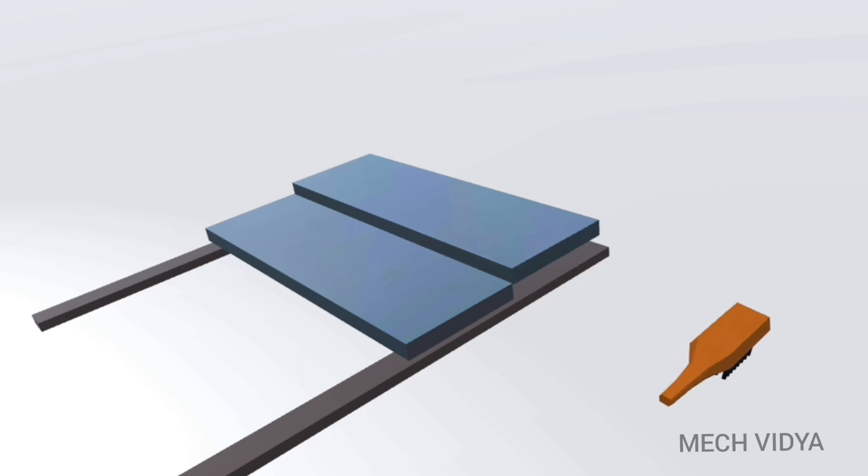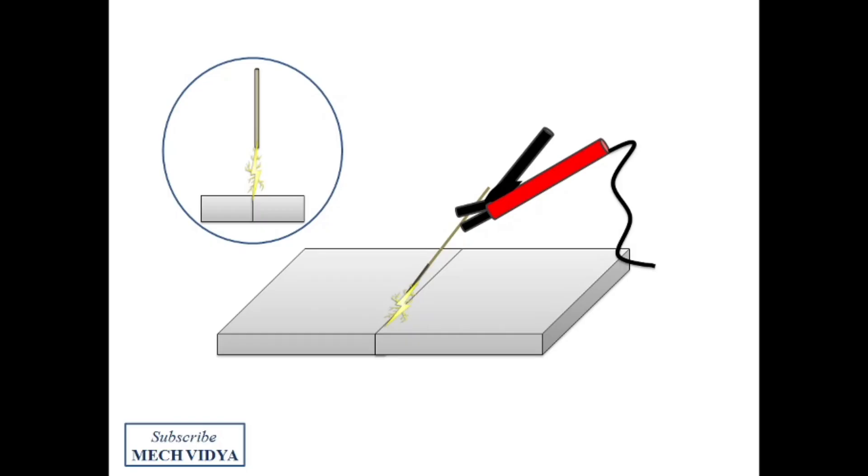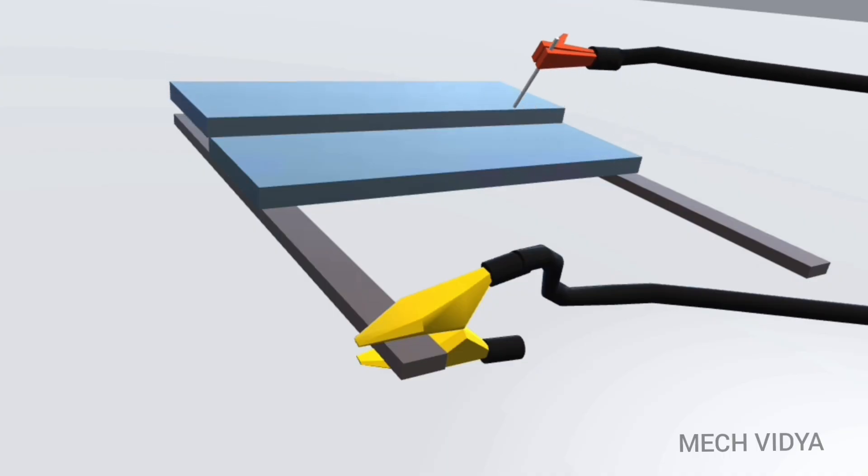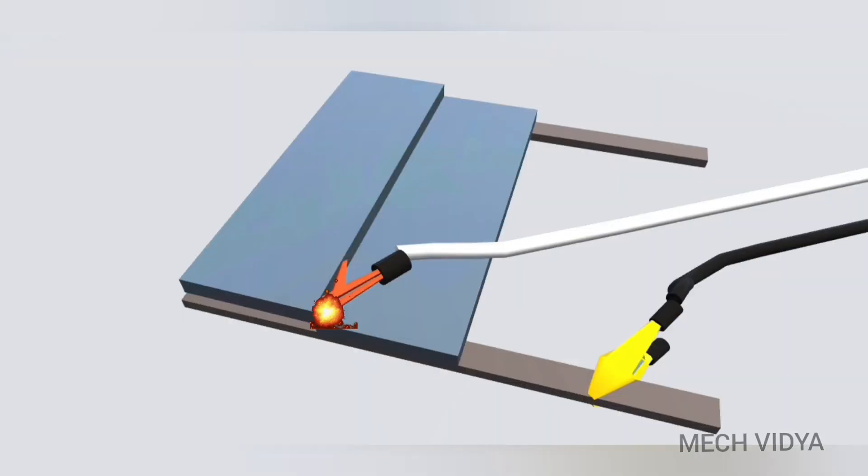Now the arc is produced in a very narrow gap between the electrode and the workpiece. We will first strike the workpiece with the electrode, and as a result a spark is generated.